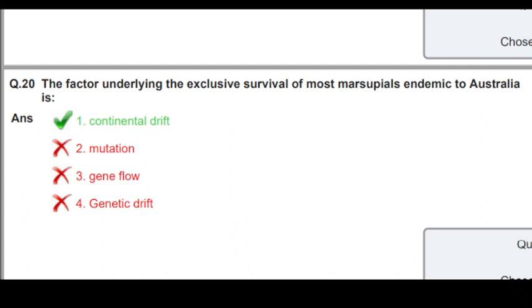Last but not least: the factor underlying the exclusive survival of most marsupials endemic to Australia is what? The answer is continental drift. Continental drift caused the continents to separate, so continental drift is the right answer.